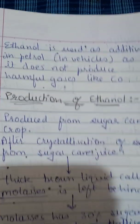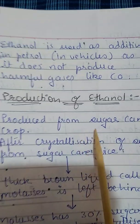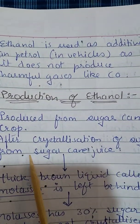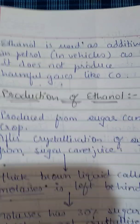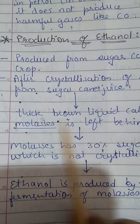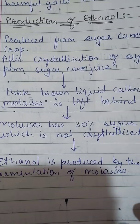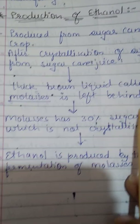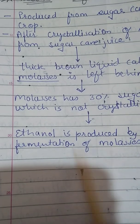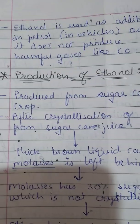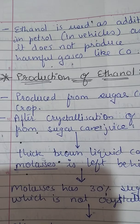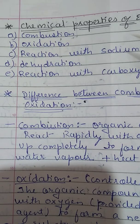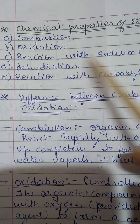Production of ethanol: ethanol is produced from the sugarcane crop. After crystallization of sugar from sugarcane juice, the leftover thick brown liquid is called molasses. Molasses contains about 30% sugar which is not crystallized. Ethanol is produced by the fermentation of this molasses.